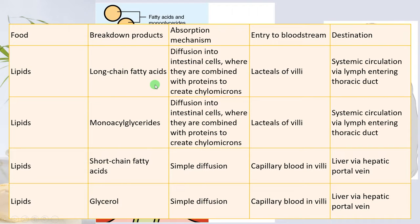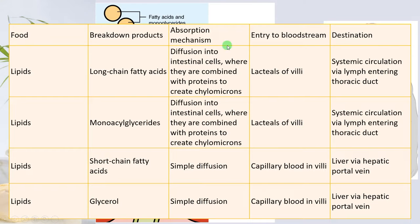In the case of long-chain fatty acids, diffusion occurs into the intestinal cells where they are combined with proteins to form chylomicrons. Lipids can easily pass through the membrane, as the plasma membrane is also made up of phospholipids. Entry into the bloodstream is by means of lacteals of the villi, with the destination being systemic circulation via lymph entering the thoracic duct. In the case of monoglycerides, the same applies — diffusion, then movement via lacteals of the villi to systemic circulation via lymph. In the case of short-chain fatty acids, they enter intestinal cells by simple diffusion, then enter the bloodstream via capillary blood in the villi, with destination being the liver via the hepatic portal vein.